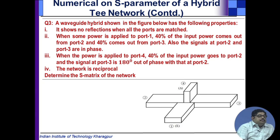Let us come to a magic T problem. It shows no reflections when all the ports are matched. When some power is applied to port 1, 40 percent of the input power comes out from port 2 and 40 percent comes out from port 3, also the signals at port 2 and port 3 are in phase. When the power is applied to port 4, 40 percent of the input power goes to port 2 and the signal at port 3 is 180 degree out of phase with that at port 2. The network is reciprocal, determine the S-matrix of the network.